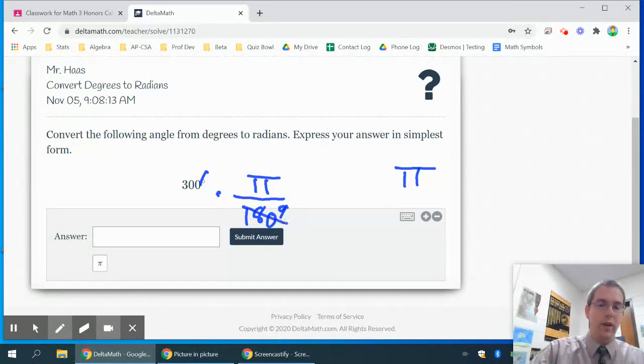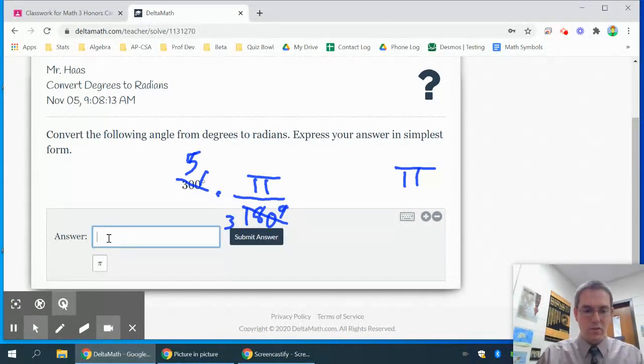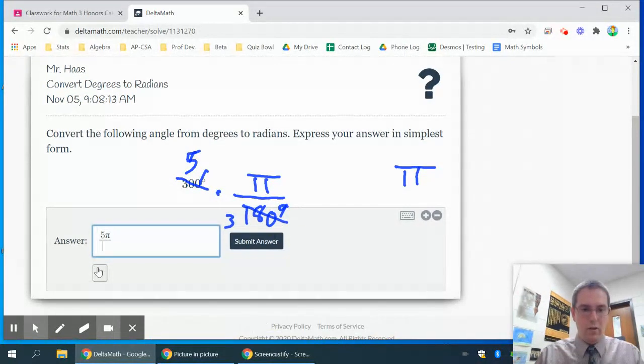Or you could reduce and say, well, 6 goes into 30 5 times, that would be better. And then 6 goes into 18 3 times. So you could have 5π over 3. And if you type that in, you just have 5π over 3. And it'll let you submit it like that.